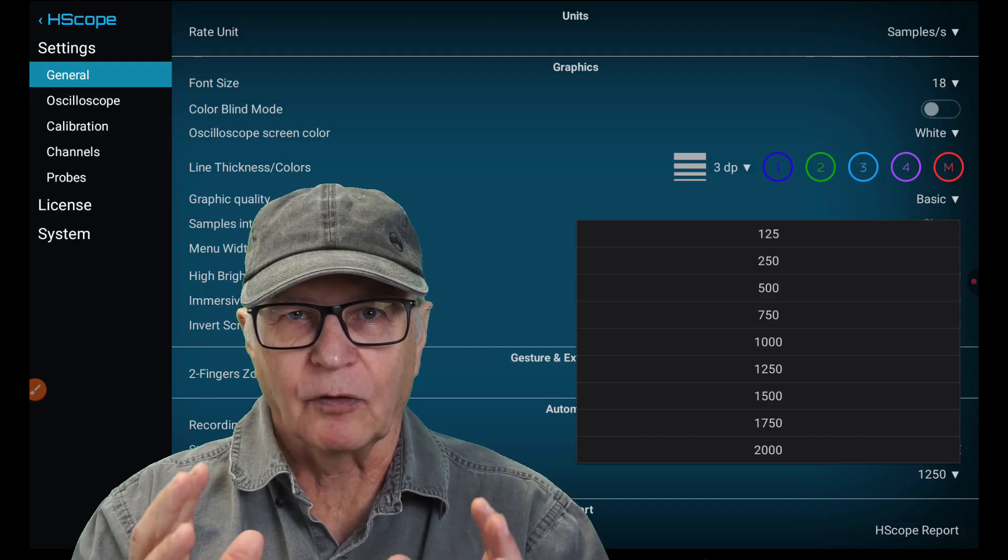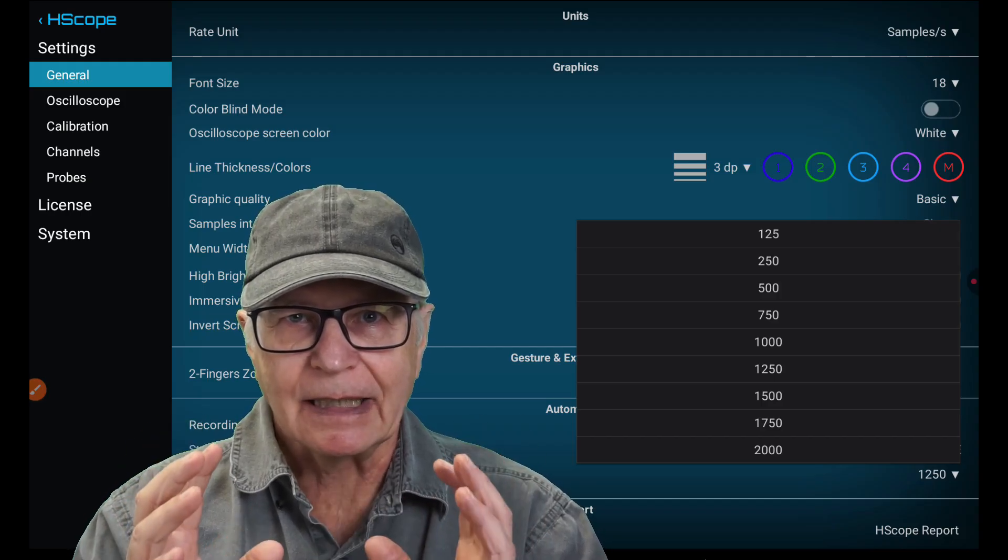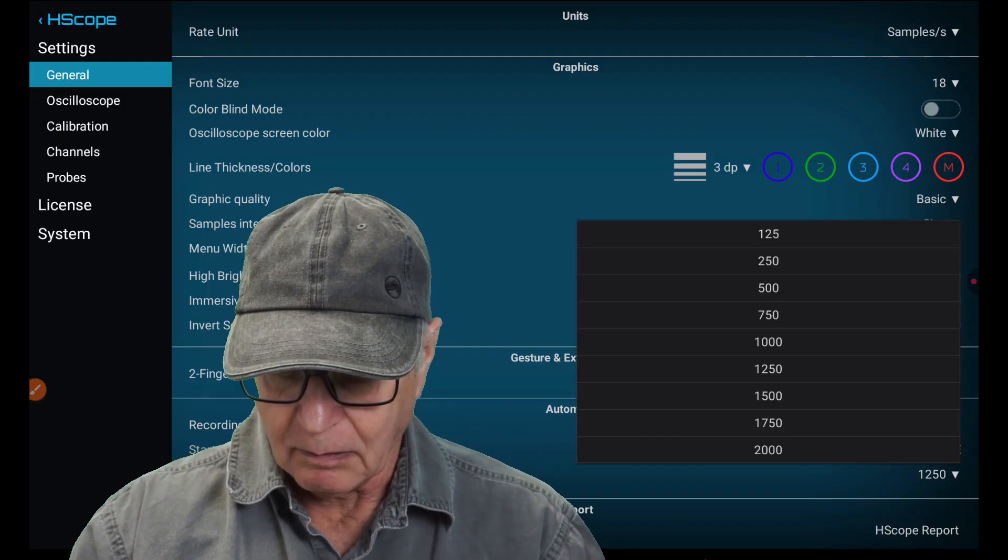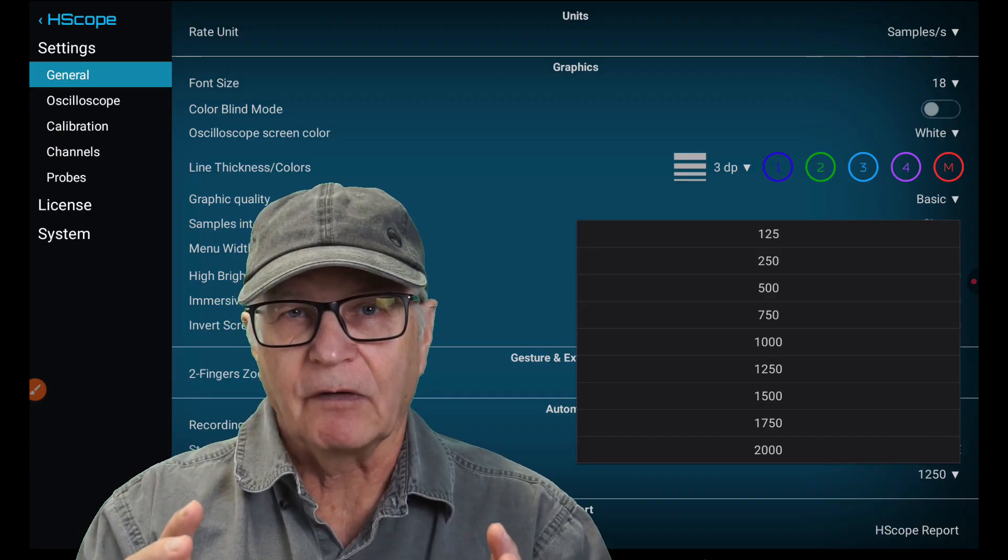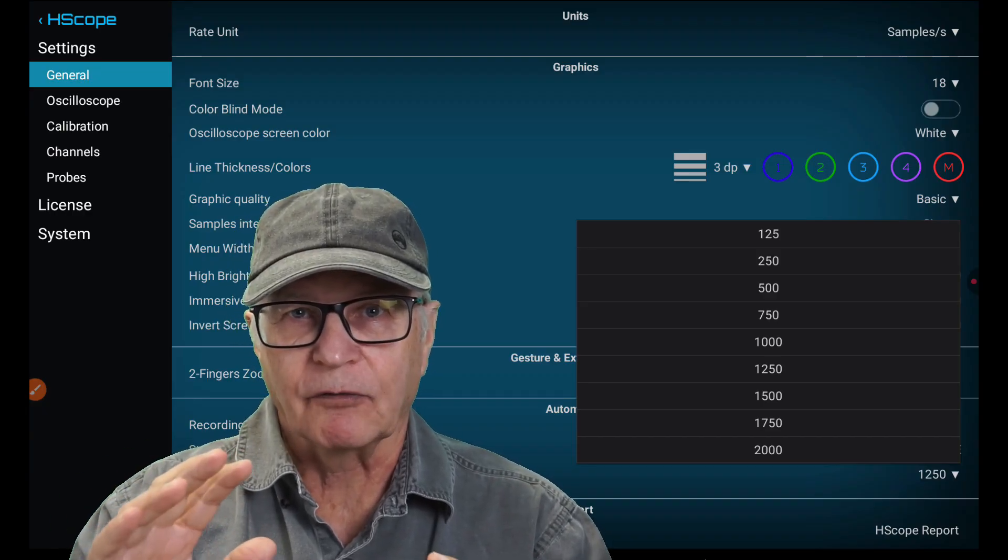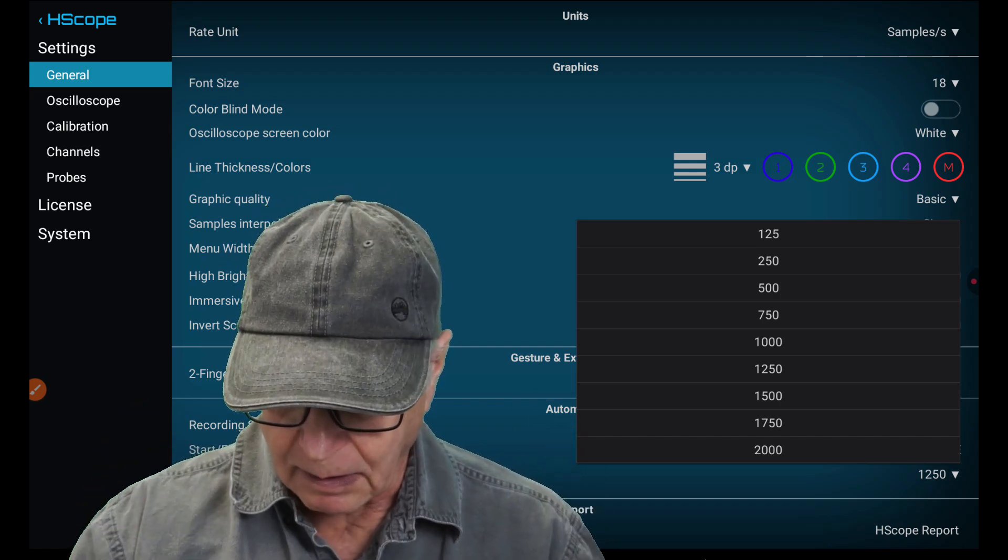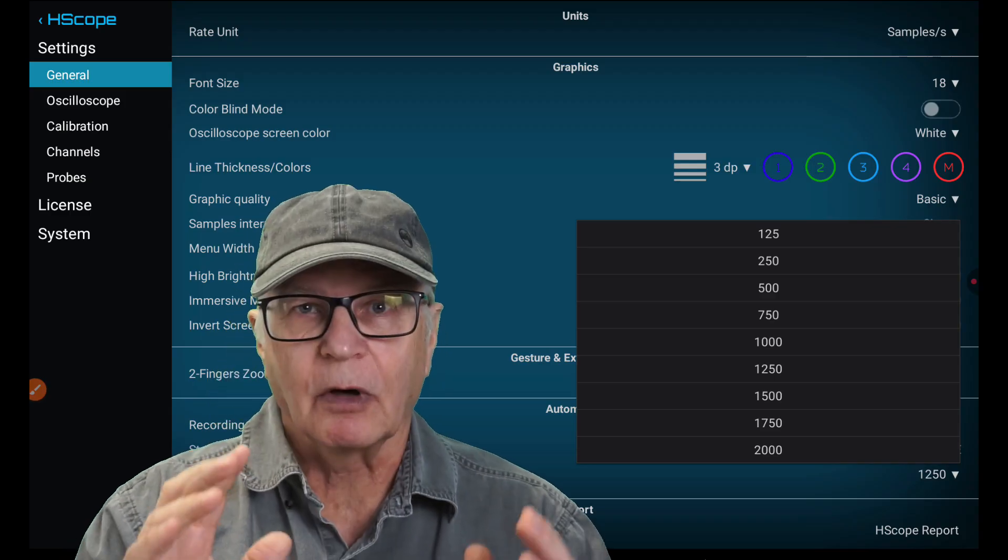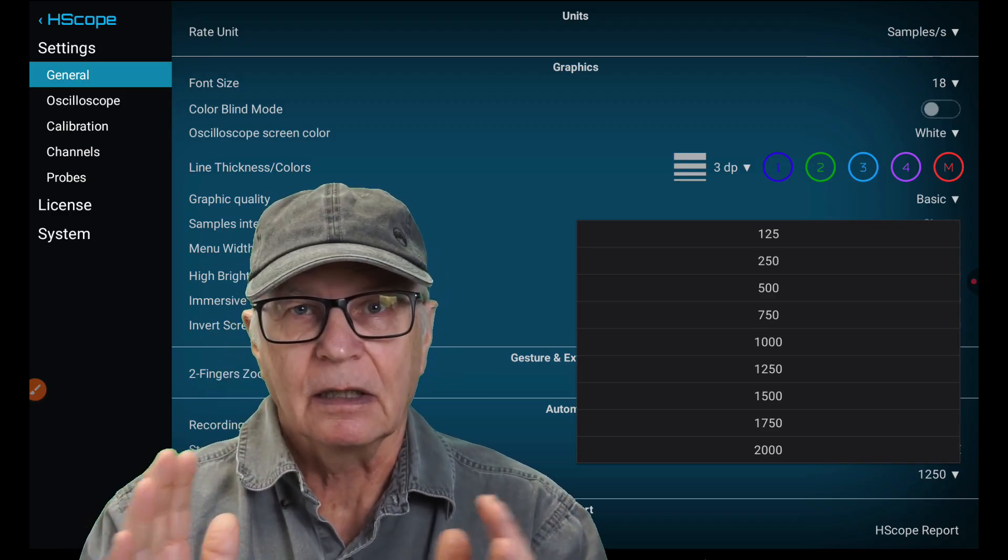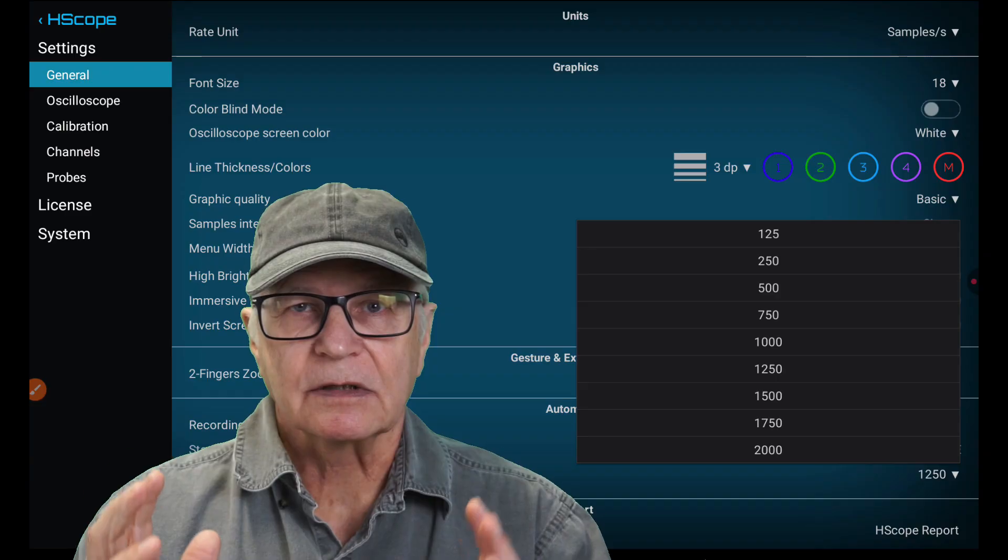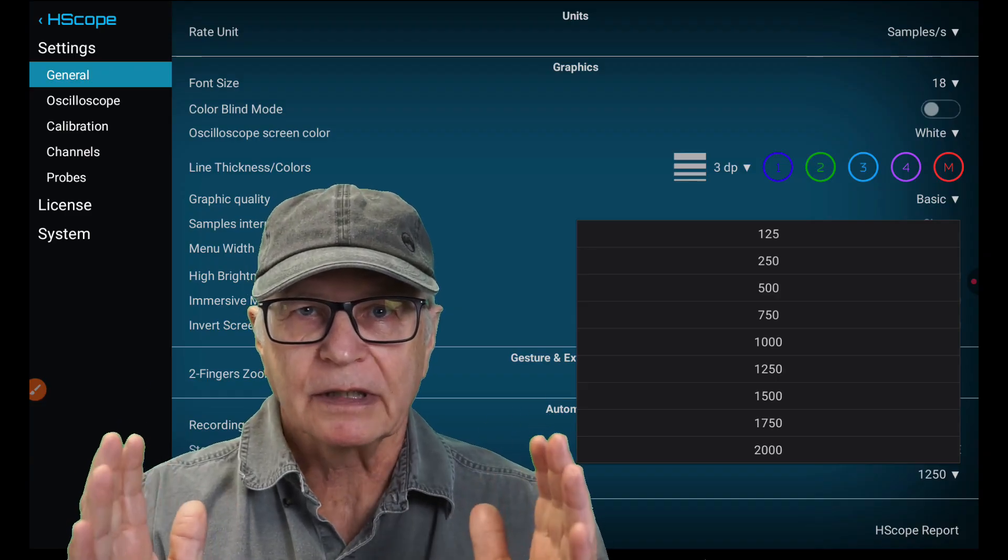So, different Android devices will top out at different buffers, memory buffers. Mine tops out at 1,250 megabytes set aside in RAM for this, but it gives us very long record times. This is useful in automotive work. Automotive work is low frequency kind of stuff for the most part.